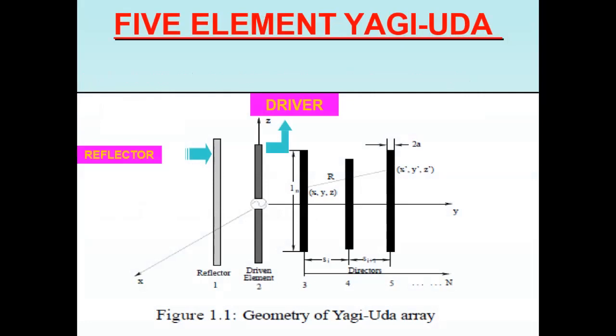Five element Yagi-Uda. In this diagram, five elements: reflector, driven element, and directors. Here in this diagram, this is the reflector, first one, second driven element, and remaining three, four, five directors. Whenever the directors are increased, whenever these elements are increased, automatically the gain will be increased. This is the five element Yagi-Uda geometry type of the Yagi-Uda antenna array.